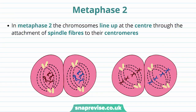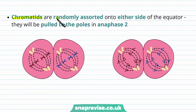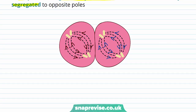In metaphase 2, the chromosomes line up at the centre through the attachment of spindle fibres to their centromeres — all the chromatids line up at the equator. The chromatids are randomly assorted to either side of the equator. In anaphase 2, the genetically different chromatids are randomly segregated to the opposite poles: the spindle fibres contract and take one from each of the chromatids to one pole and then to the other, and this is happening in both cells simultaneously.